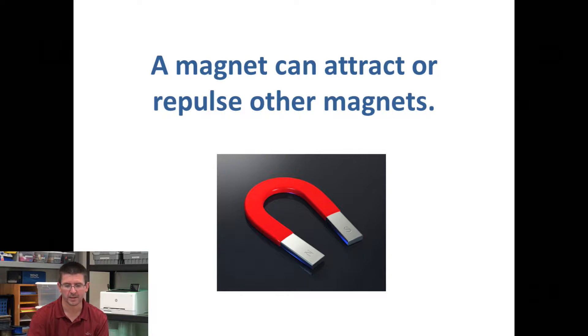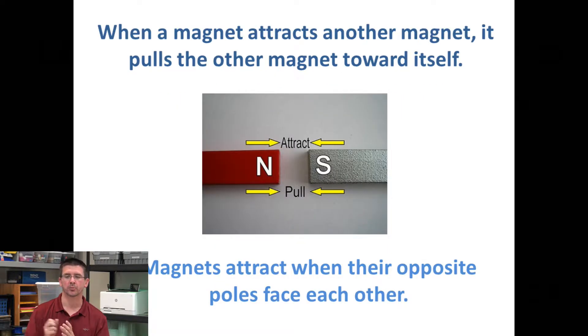When a magnet attracts, basically all that's happening is it's pulling that other magnet toward itself, and this happens as a result of the magnetic poles. Each magnet has a north pole and a south pole that have to do with the way the electrons in the atoms are lined up.